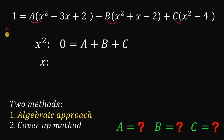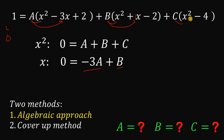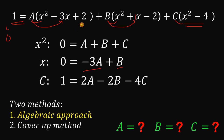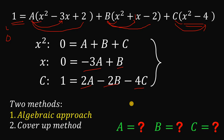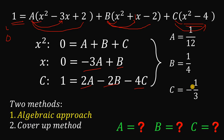Comparing coefficients of x squared: 0 equals A plus B plus C. Comparing coefficients of x: 0 equals negative 3A plus B. Comparing constant terms: 1 equals 2A minus 2B minus 4C. Solving these three equations using elimination, comparison, or substitution, we get A equals 1 over 12, B equals 1 over 4, and C equals negative 1 over 3.